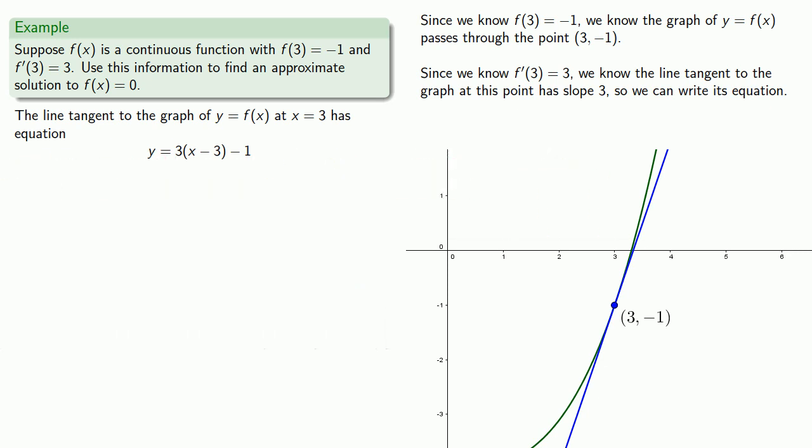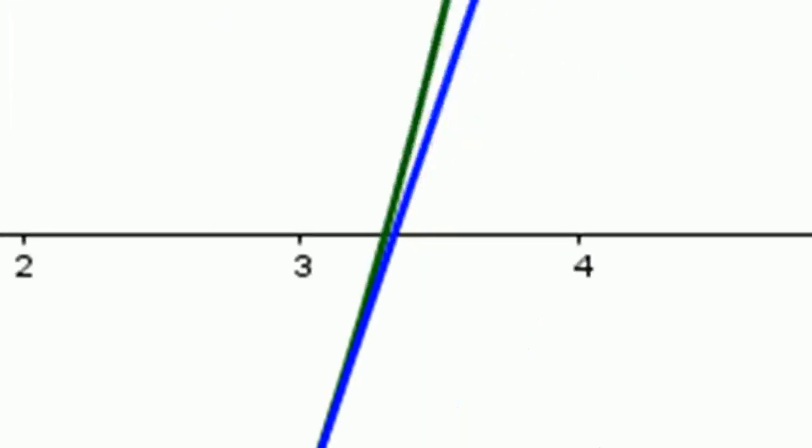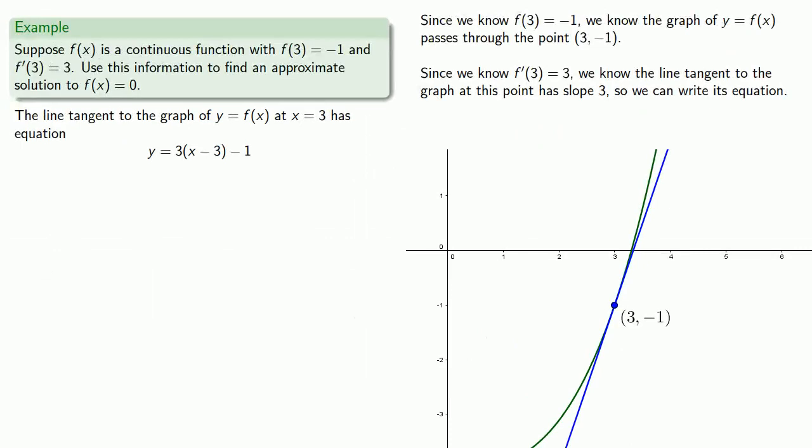The thing to notice is that where the tangent line intersects the x-axis is close to where the graph of the function intersects the x-axis. So an approximate solution to f(x) = 0 can be found by finding where the tangent line intersects the x-axis.